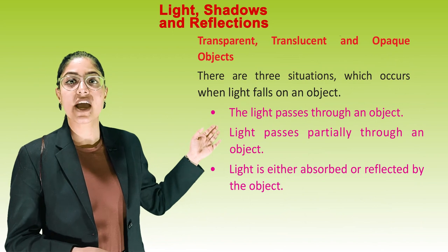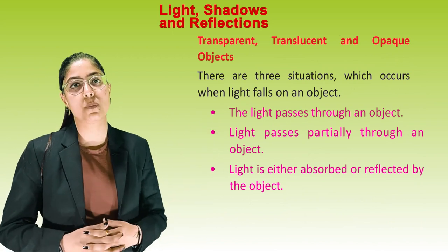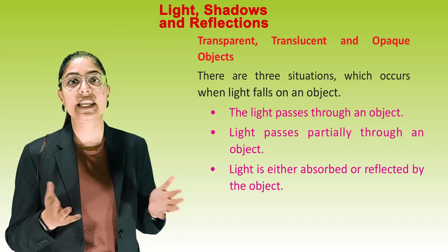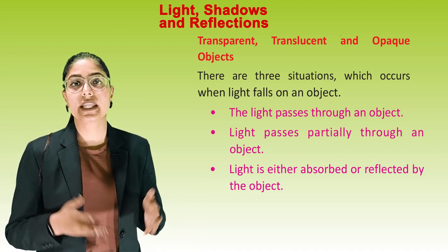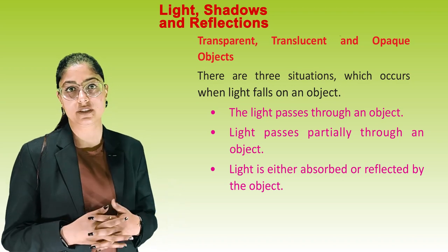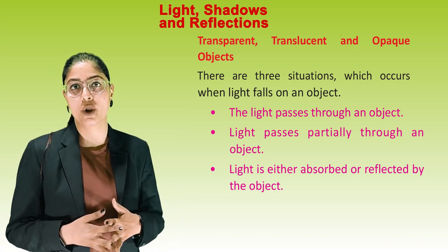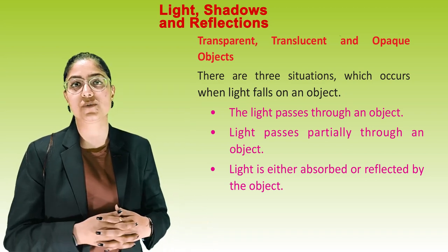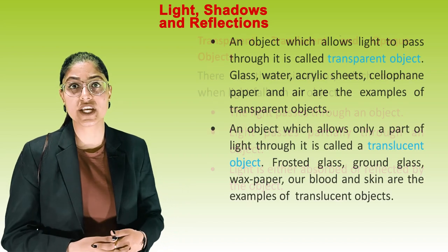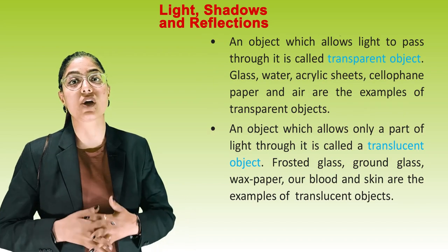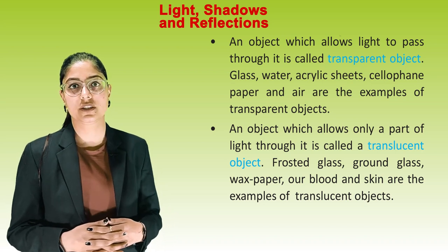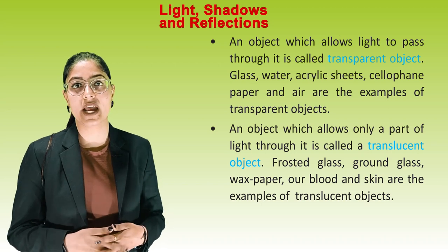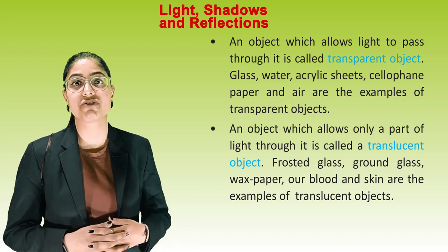Transparent, translucent, and opaque objects. There are three situations which occur when light falls on an object: the light passes through an object; the light passes partially through an object; or the light is either absorbed or reflected by the object. An object which allows light to pass through it is called a transparent object. Glass, water, acrylic sheet, cellophane paper, and air are examples of transparent objects.